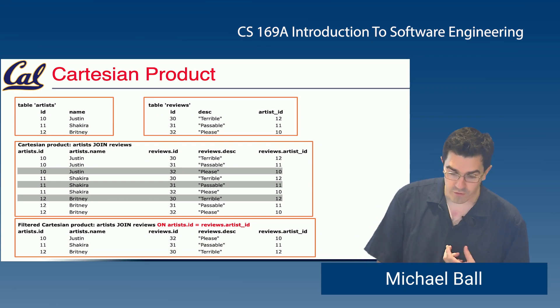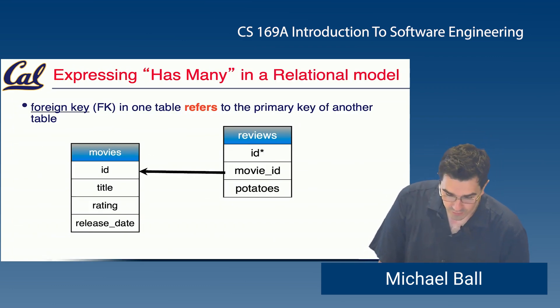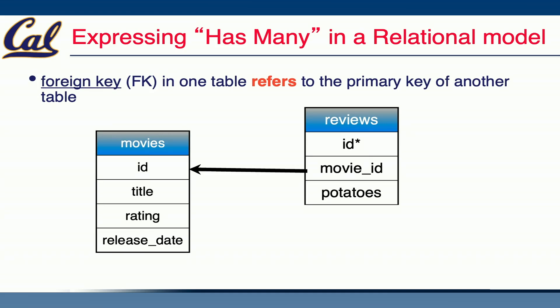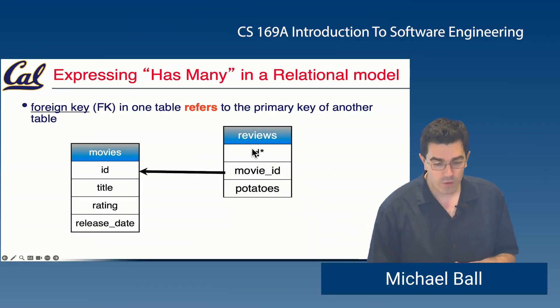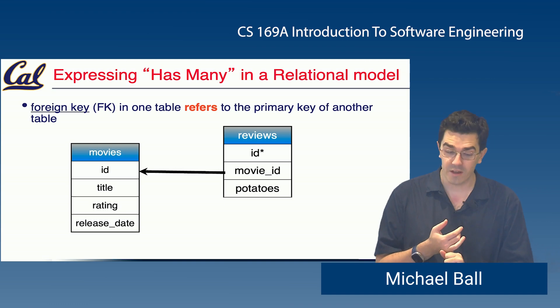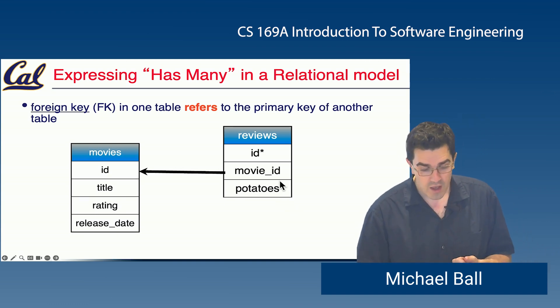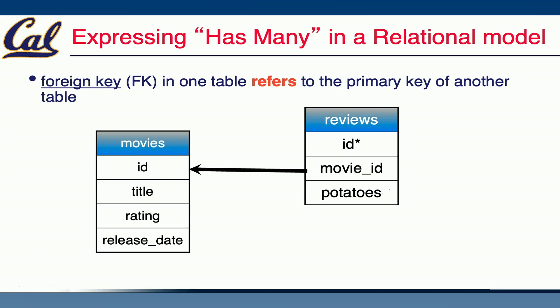That's the goal of associations in our application, and we're going to represent this with the idea of foreign keys. We're going to introduce the reviews model. In the app we're using today, I've already run the database migration to create the reviews table — it's the exact same stuff we've done before. We have a reviews table which has an ID — every table has a primary key, a unique identifier — plus a new column we're going to call a foreign key: movie_id. And of course it's going to have the potatoes rating column, along with probably a description.